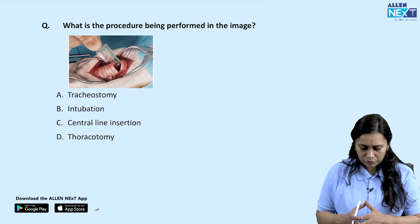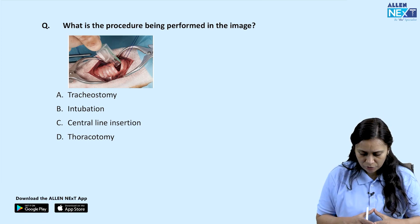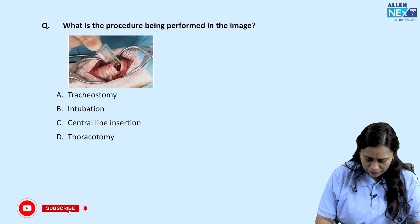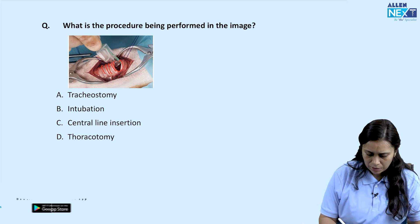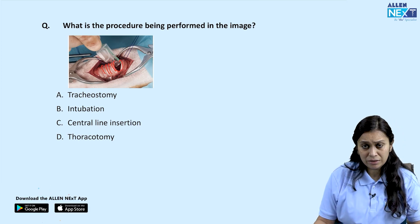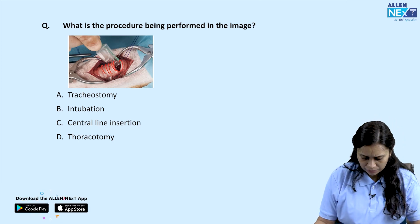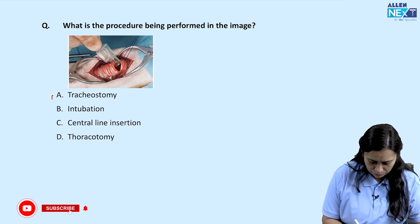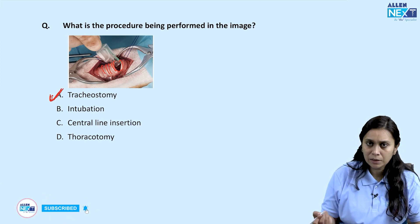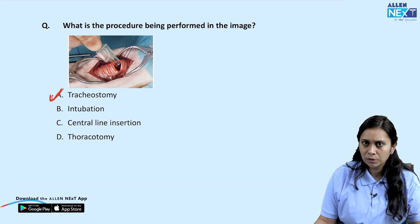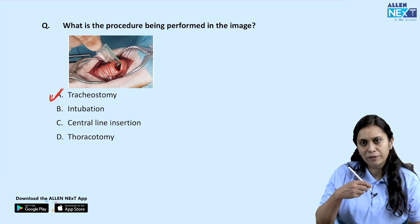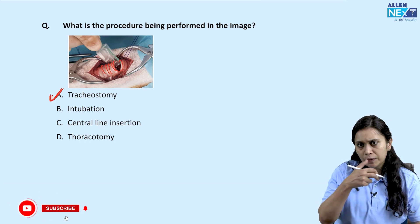Next question asks what procedure is being performed in the image. We can clearly see the tracheal rings — a hole is made in the trachea and a tube is being inserted. This is definitely tracheostomy. Intubation uses the oral or nasal cavity with a laryngoscope; central line insertion uses a great vein; here the trachea is open, so it is tracheostomy.